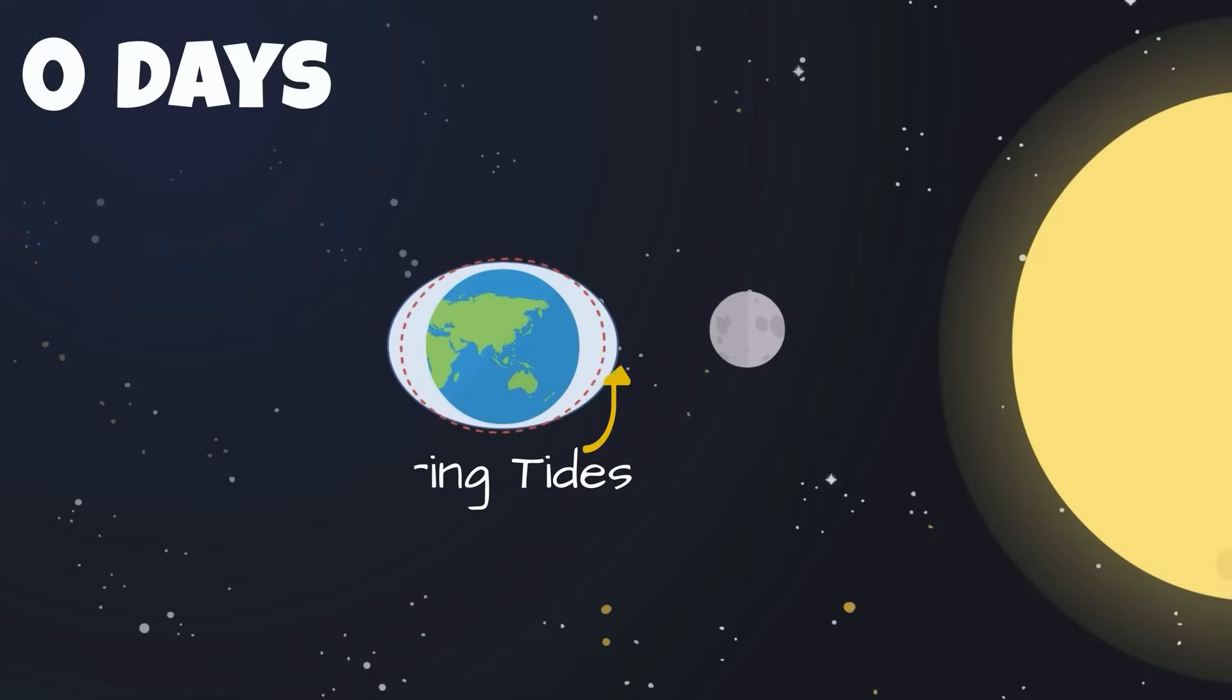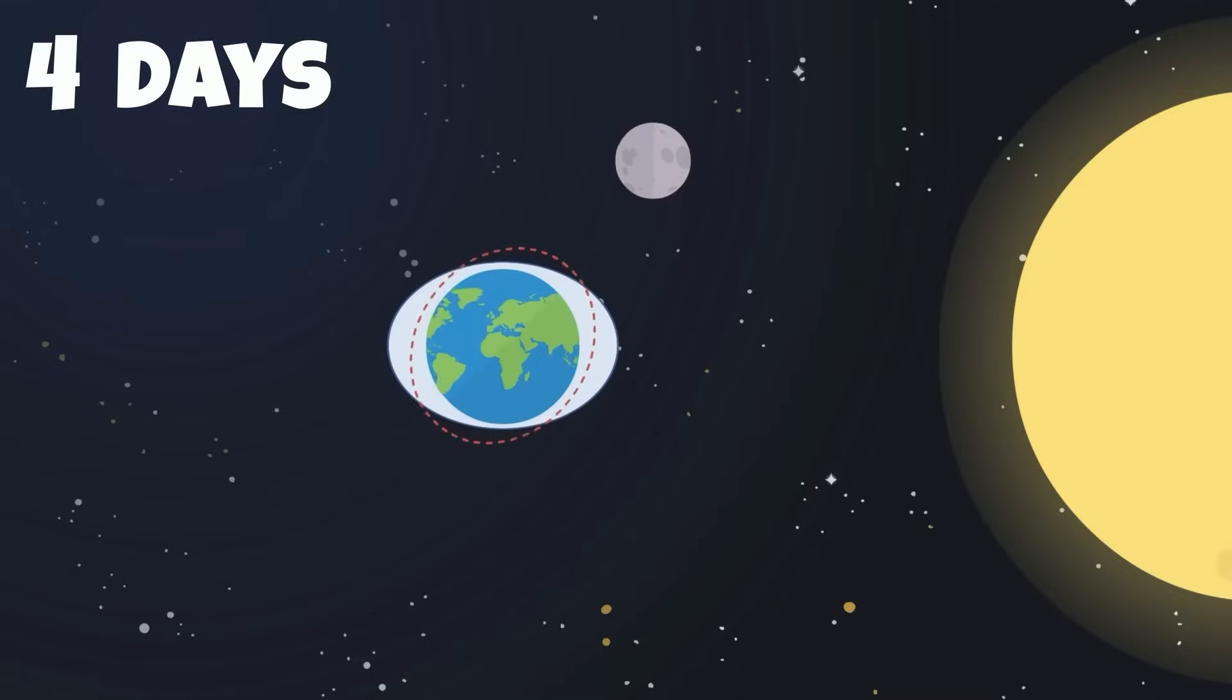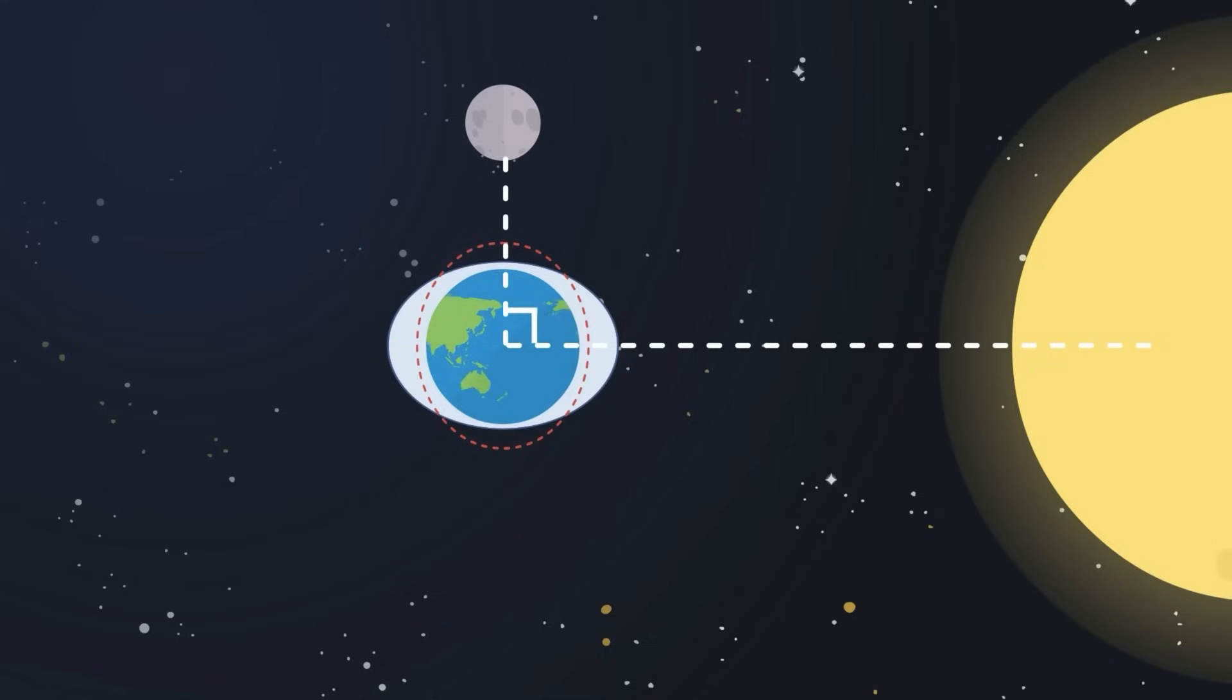It takes the moon seven days after a spring tide to orbit around the Earth and form a right angle in its position to the sun. This is when neap tides are formed.